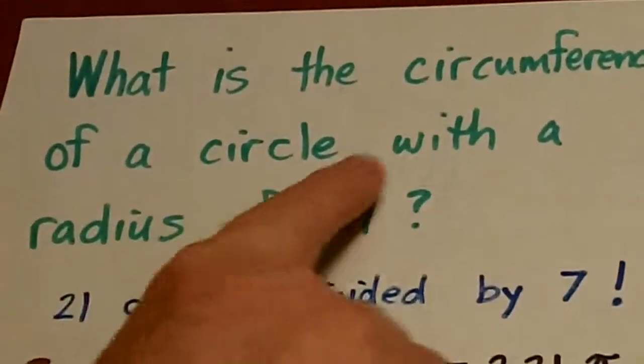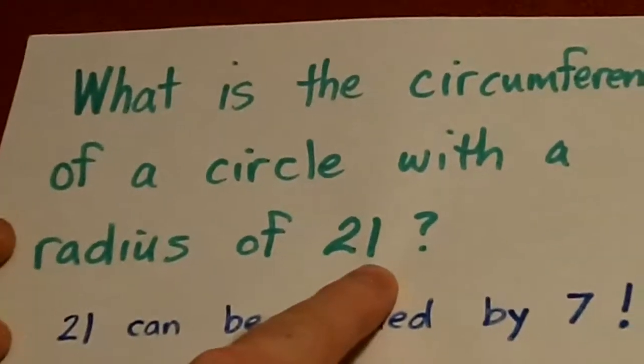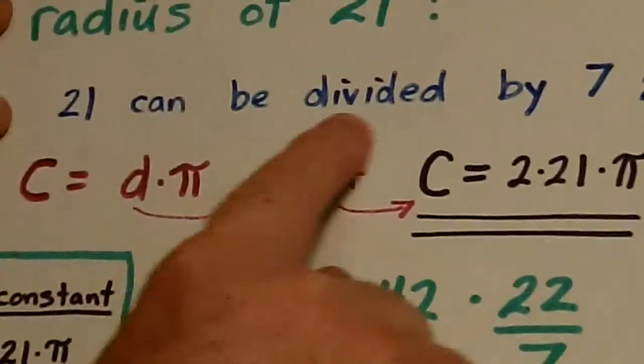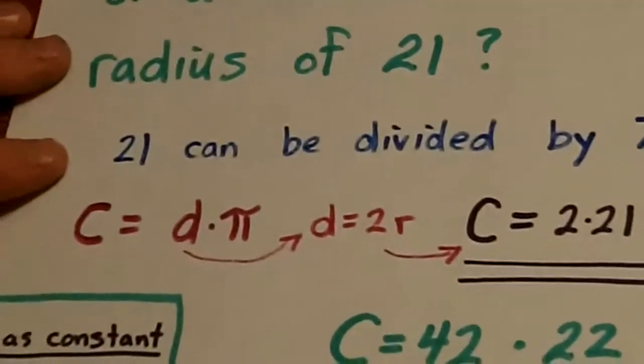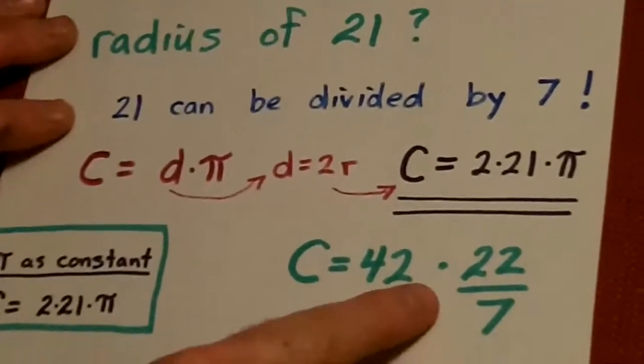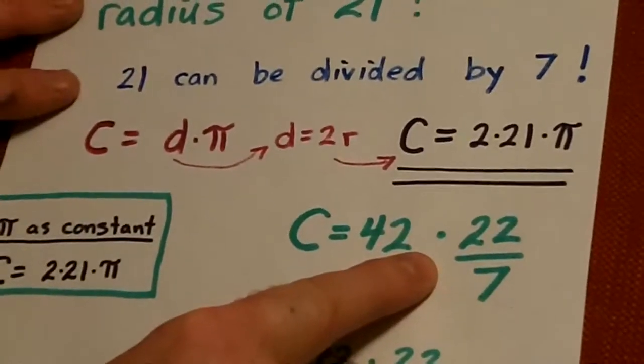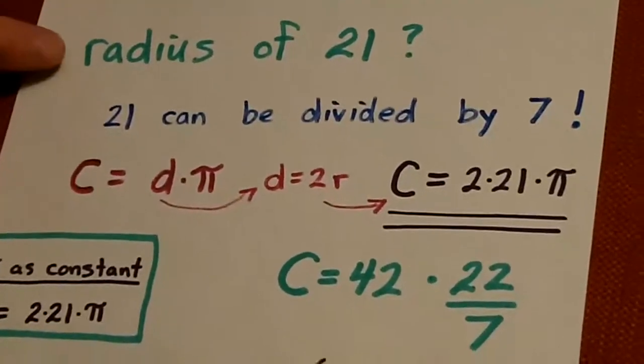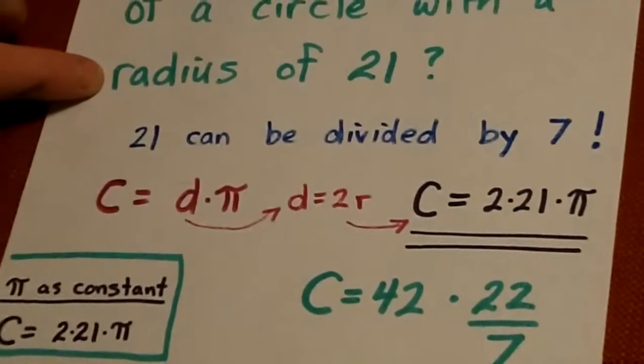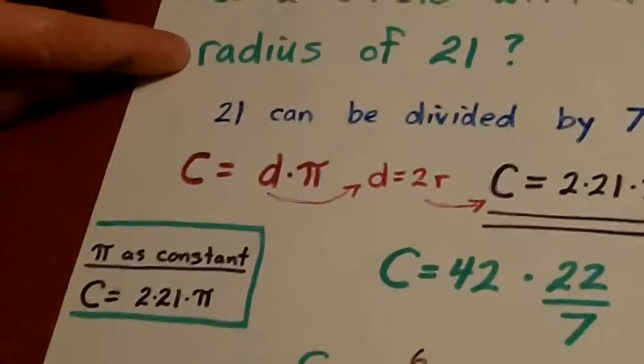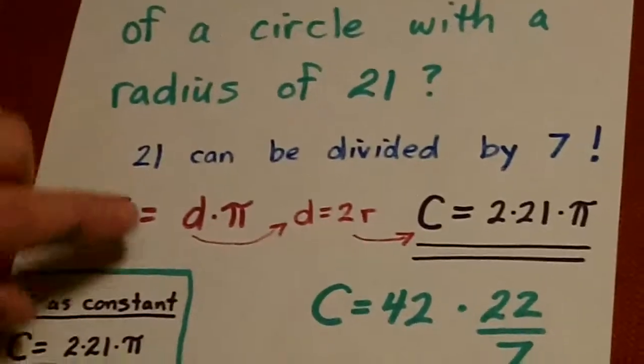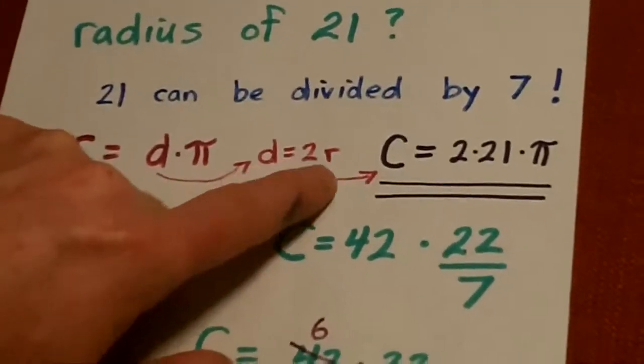What is the circumference of a circle with a radius of 21? Hey, 21 can be divided by 7, so what are we going to do? We're going to use 22 sevenths. Now, we have to remember, they're trying to trick us by saying radius of 21 instead of diameter. And we know that the diameter is equal to 2 times the radius.